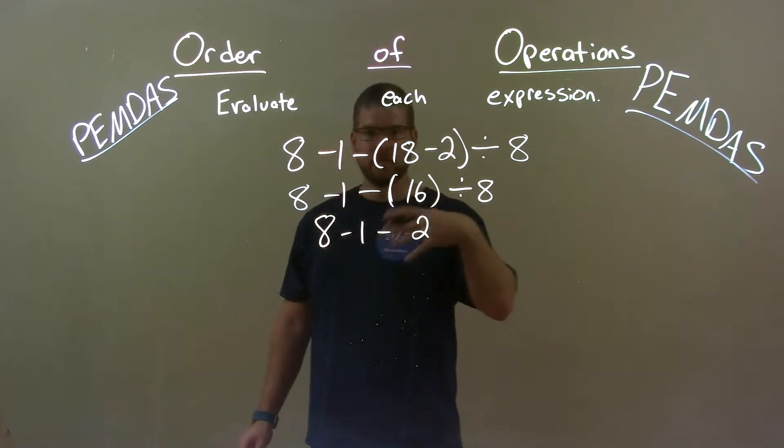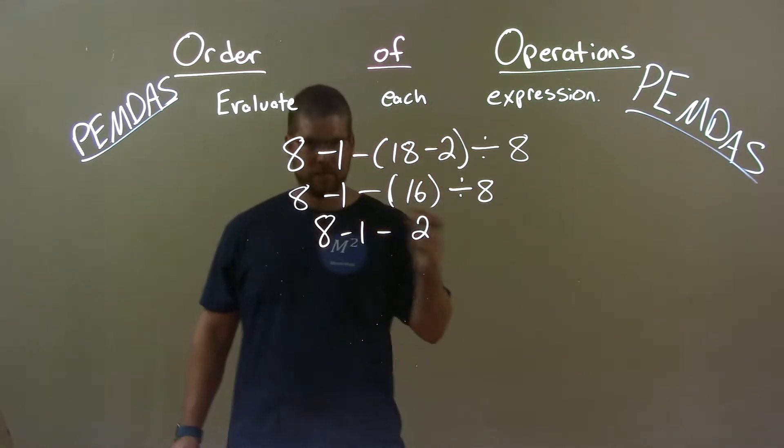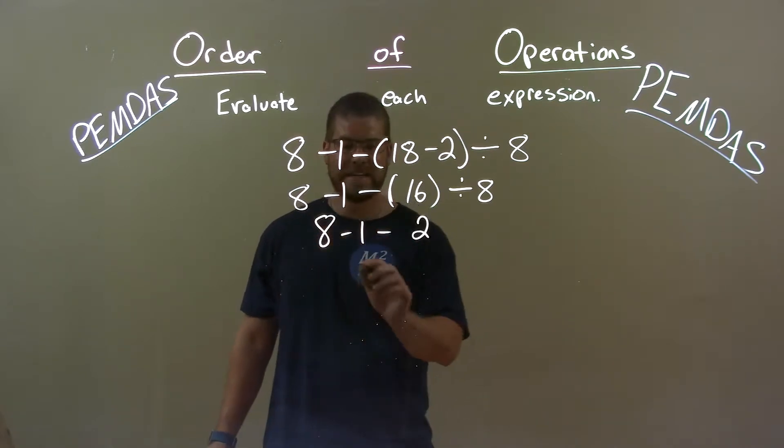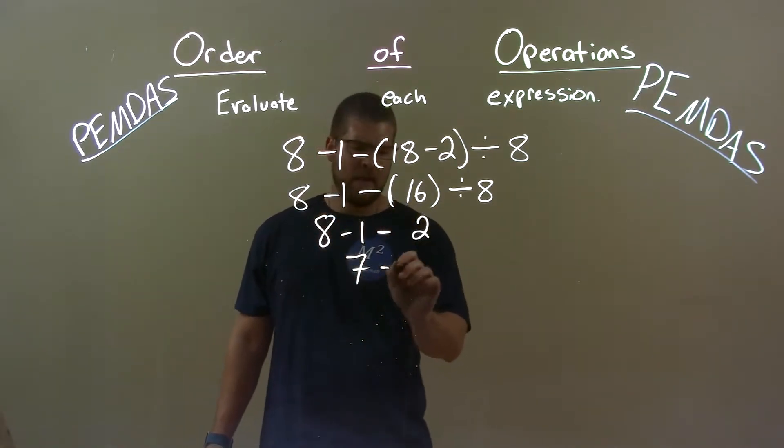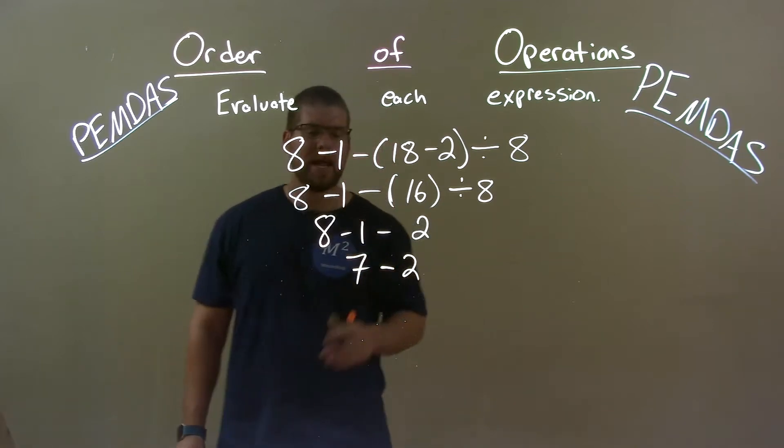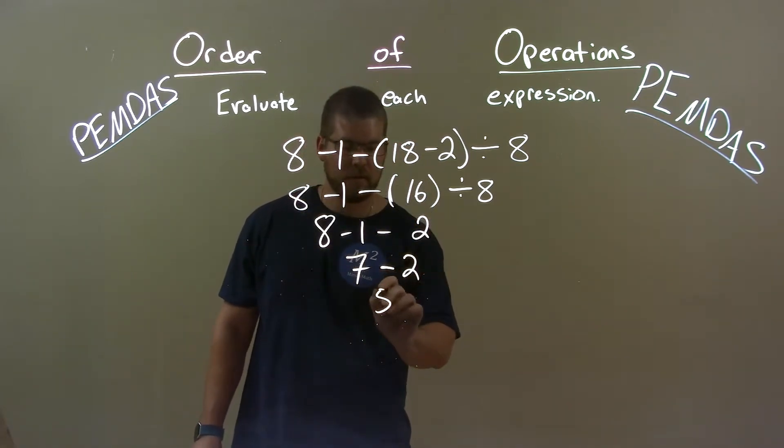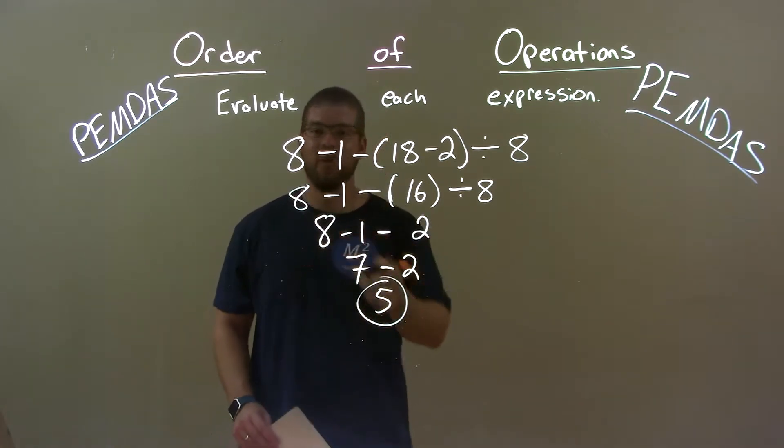Now, left to right, okay, left to right. It's all a subtraction. 8 minus 1 is a 7. Bring down that 2 with subtraction. Now we have 7 minus 2. 7 minus 2 is a 5, and so 5 is now our final answer.